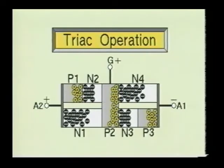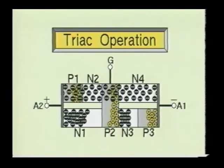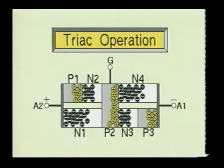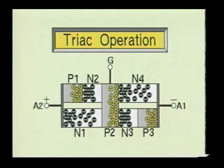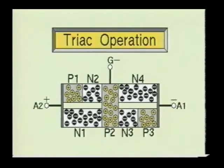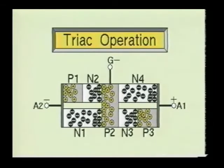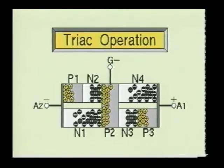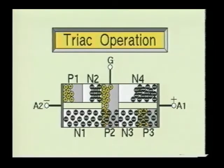The gate lead on the TRIAC is used to control the direction of current flow and the point of the sine wave at which the device will start conducting current. The TRIAC is very useful in controlling AC loads in which rectification is not desired.